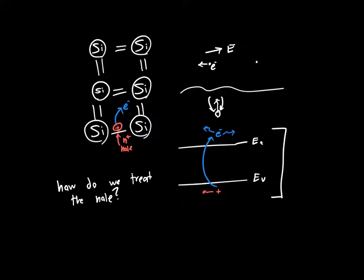But we don't really know how to treat the hole. We could just say that when we apply an electric field, the hole has the same mass as an electron and it just moves in the direction of the electric field. And you could use that model, but you'd come up with some predictions that aren't quite correct and you wouldn't be able to make very many quantitative predictions about how the semiconductor would behave.